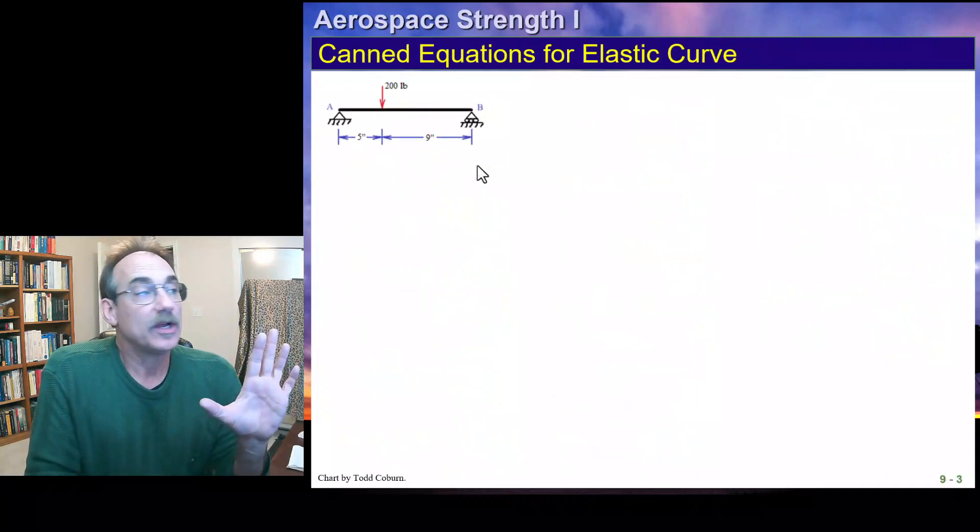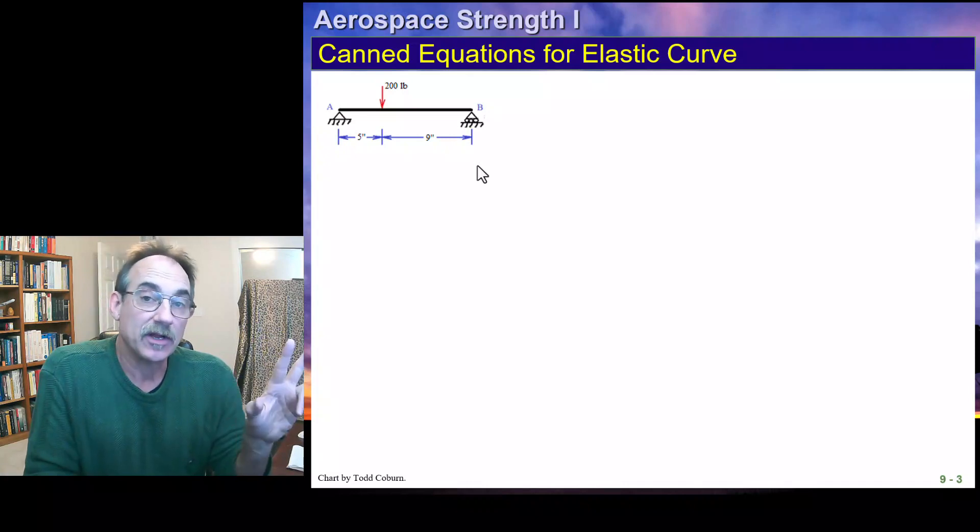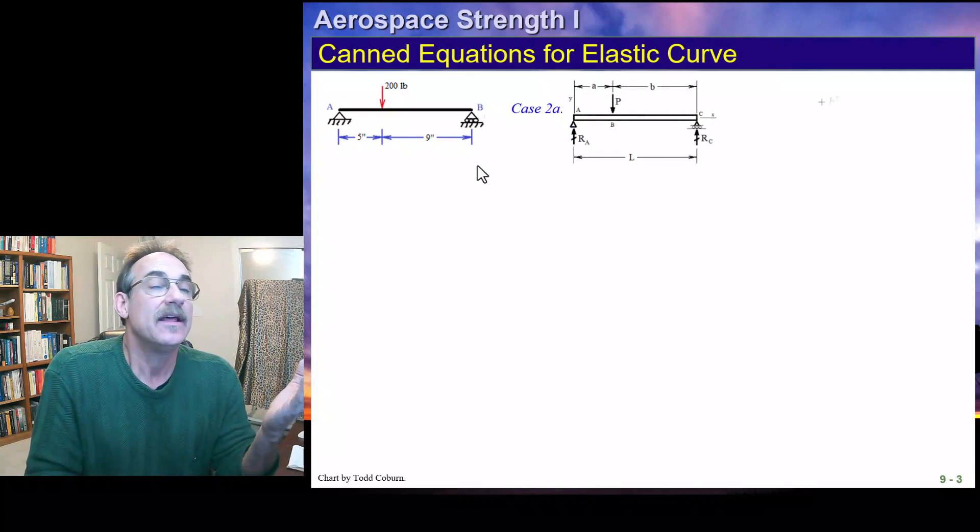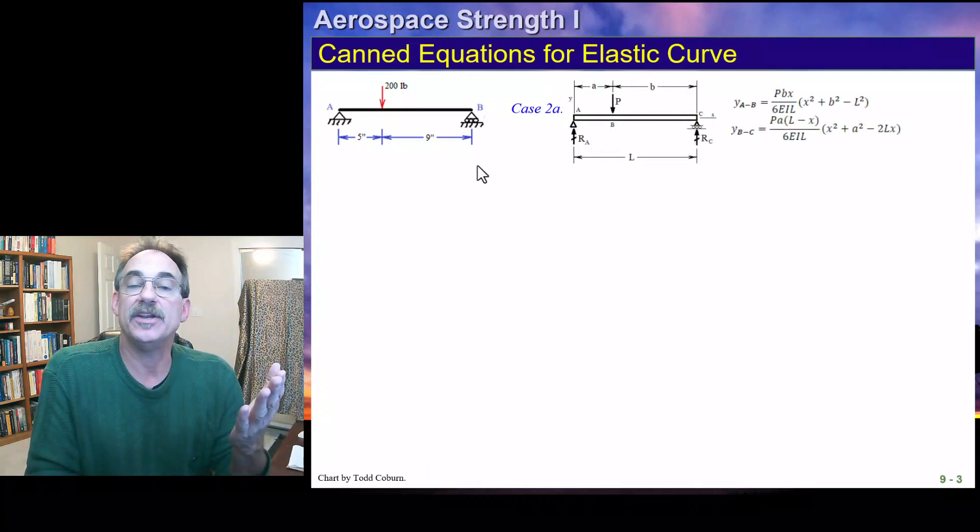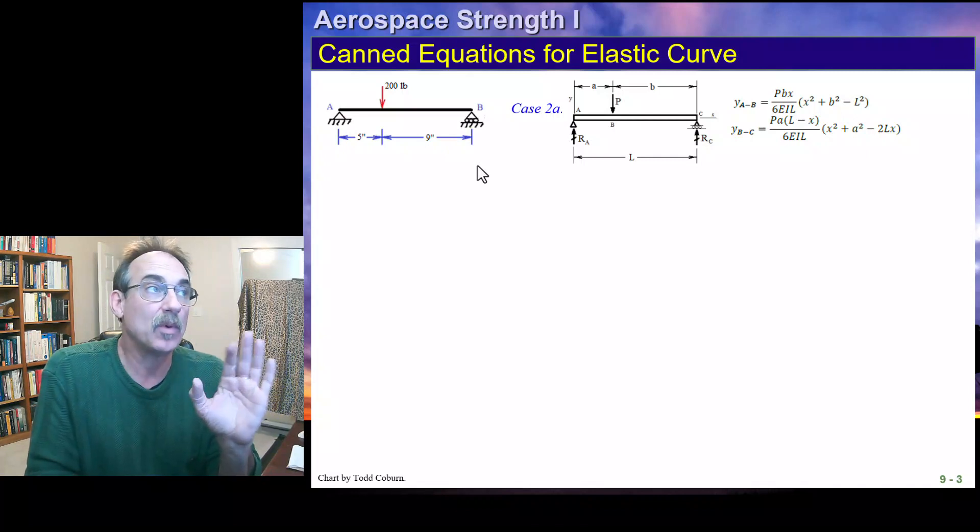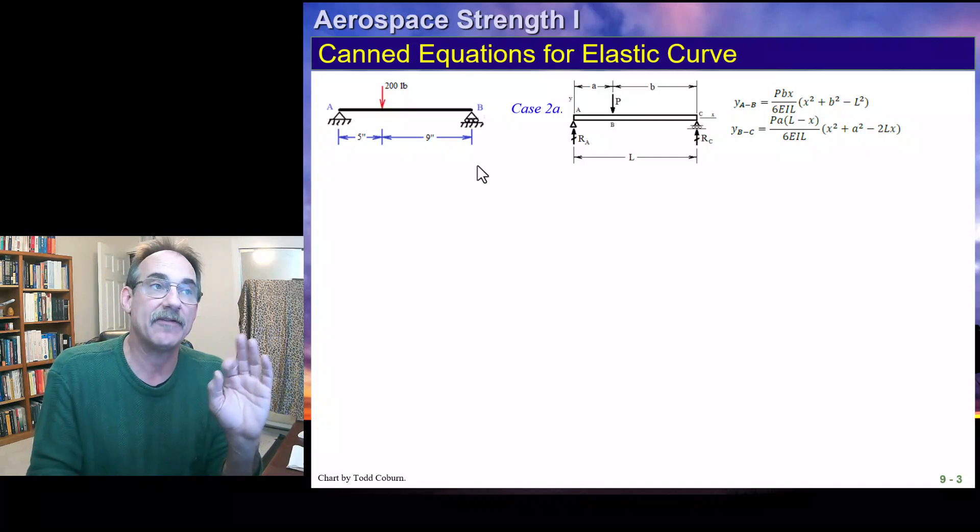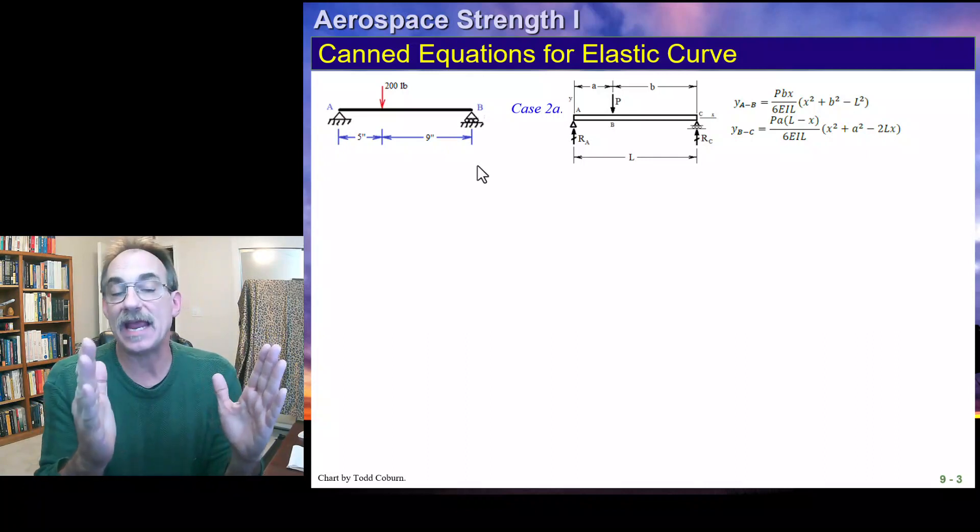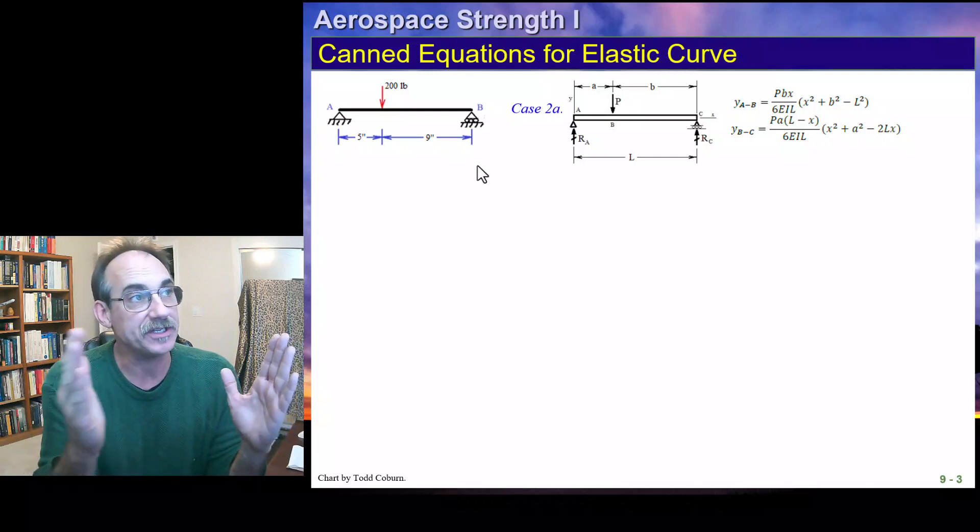Let's take a look at this case. If we look at this particular case, we've got a pinned-pinned beam with a loading located somewhere along the beam. We find out that Case 2A is precisely that. Now remember, when we have a point load, we're going to have, if we use continuous calculus, we're going to have one function for every little span of the beam where something changes.